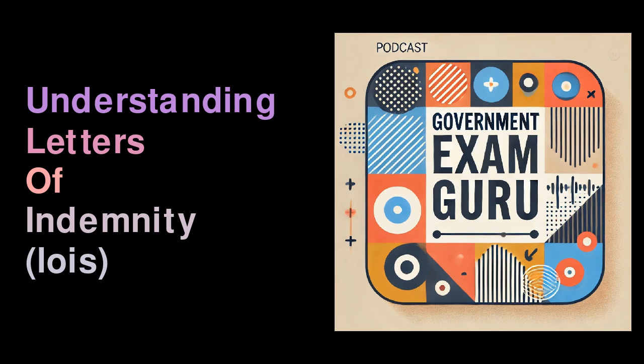Key takeaways. Definition: an LOI is a legal agreement that renders one or both parties harmless in case of delinquency or breach of a contract. Protection: it indemnifies parties against possible losses, typically backed by a third party like an insurance company. Applicability: LOIs find usage across various business dealings including global trade, loans, and corporate mergers.